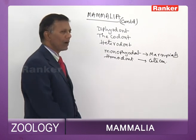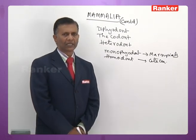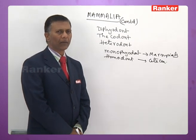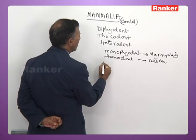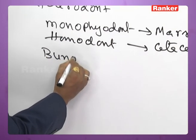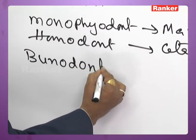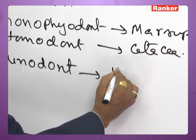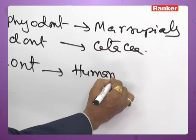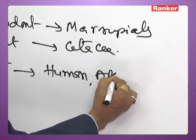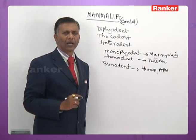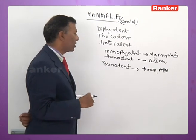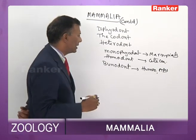On the basis of the nature of cusps — that is, grinding edges — teeth are divided into different types in mammals. For instance, in human beings, it is called bunodont dentition. Bunodont dentition is present in humans and apes because the teeth have round cusps.